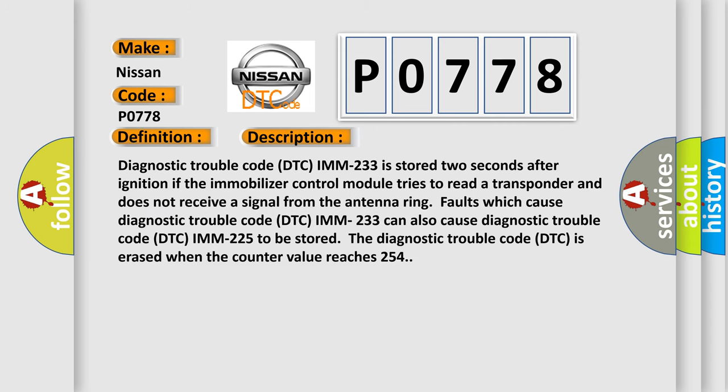Diagnostic trouble code DTC IMM-233 is stored two seconds after ignition if the immobilizer control module tries to read a transponder and does not receive a signal from the antenna ring. Antenna ring faults which cause diagnostic trouble code DTC IMM-233 can also cause diagnostic trouble code DTC IMM-225 to be stored. The diagnostic trouble code DTC is erased when the counter value reaches 254.